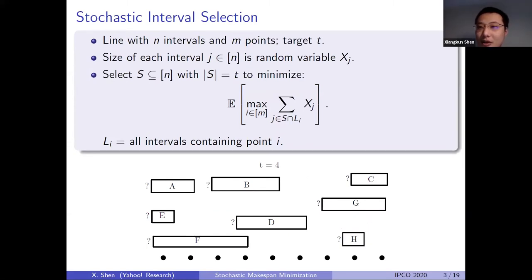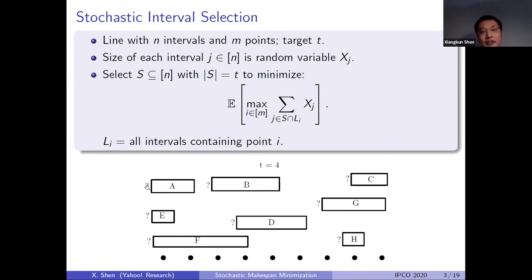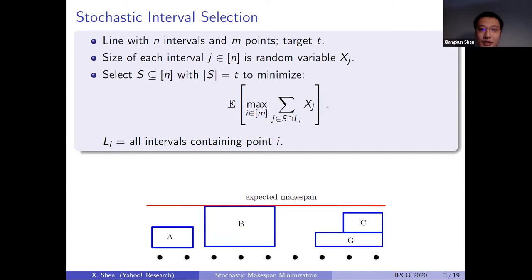In our work, we consider the stochastic version of this problem. We still have a line with n points and intervals, but instead of deterministic sizes, each interval has a random variable describing a random size. The objective becomes to minimize the expected mixed span, as shown here. We use L_i to denote all the intervals that contain point i. For any given solution, the expected mixed span is the weighted sum of all possible realizations from this solution.